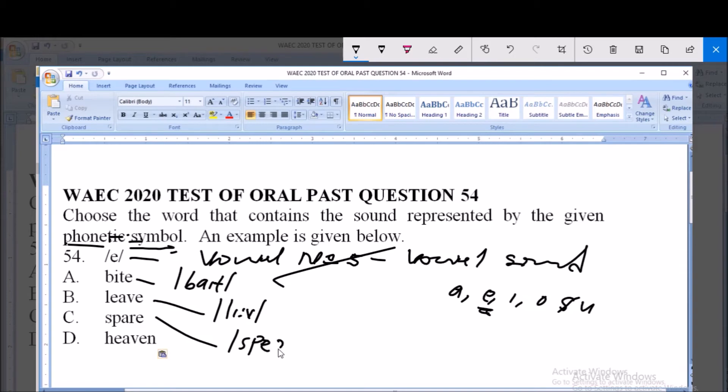Option D is pronounced and translated as 'heaven'. So you find that the only word in transcription that has this sound is option D. Therefore, option D is correct.